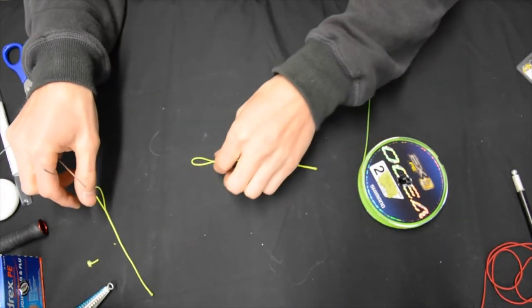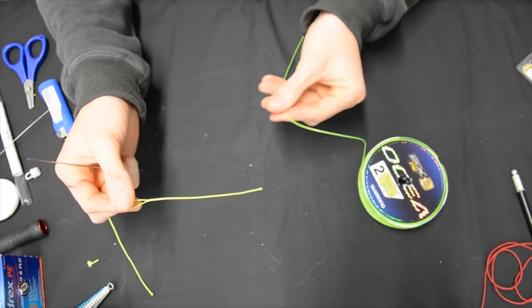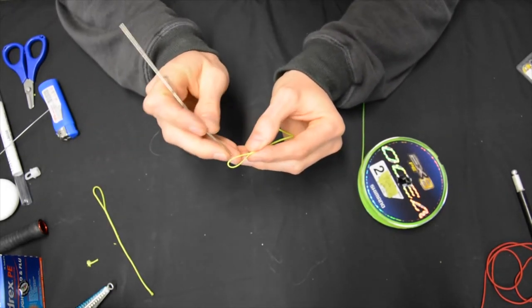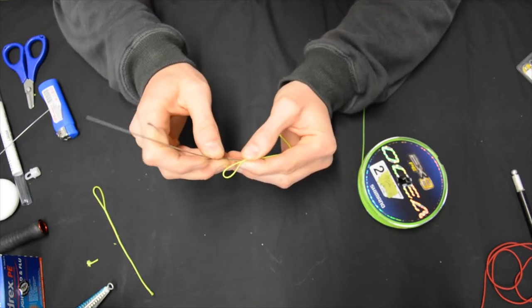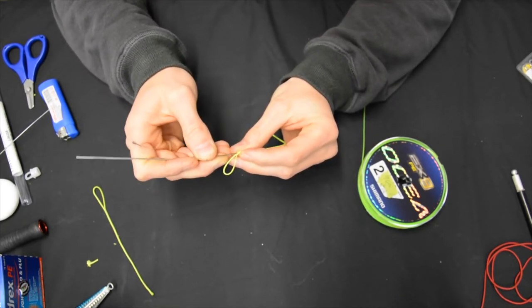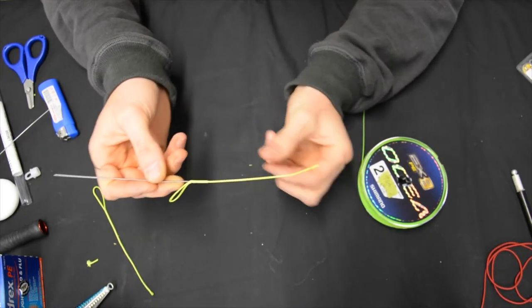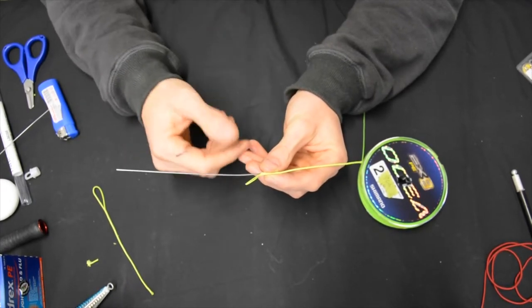From there basically you just grab your loop and now we're going to put it onto our main line. So to do this basically what we do is we get where the Dacron goes inside the other Dacron. I like to get the needle and basically just slowly work it inside there. And so you're working it inside the two sleeves of Dacron. Okay so it's made its way inside both. If you're only inside one and not the other it's not super important.